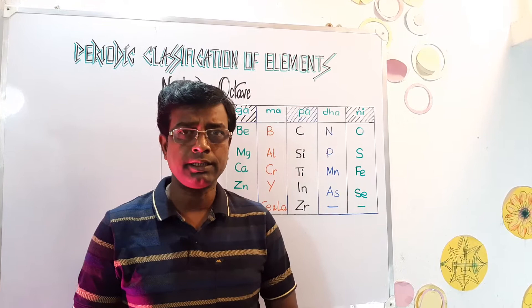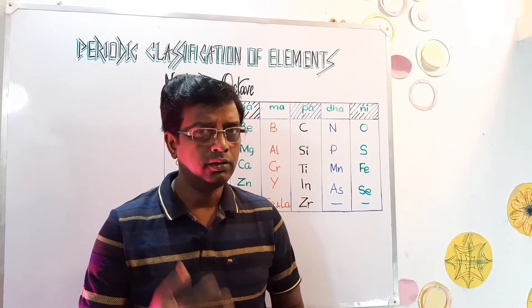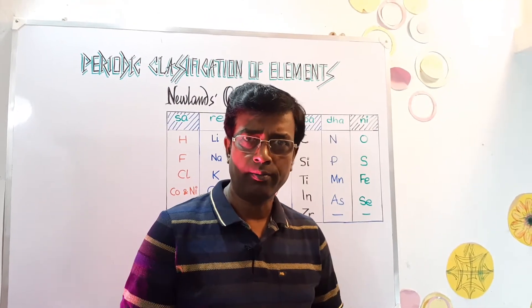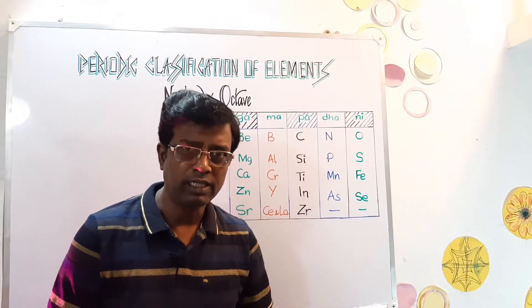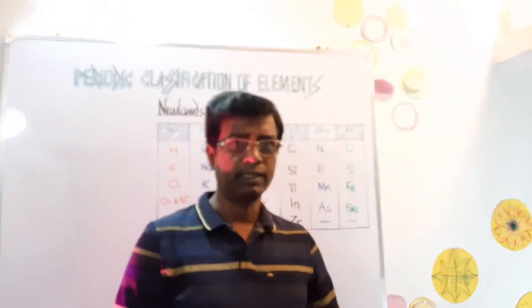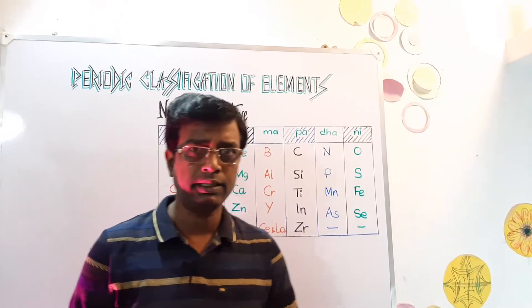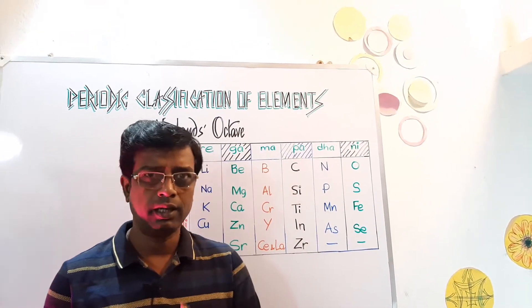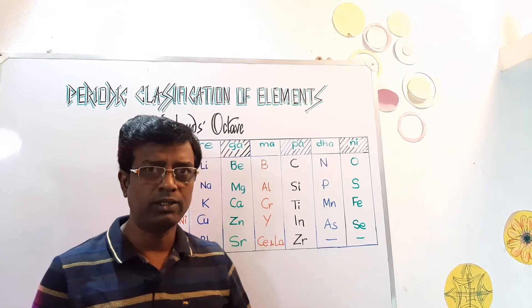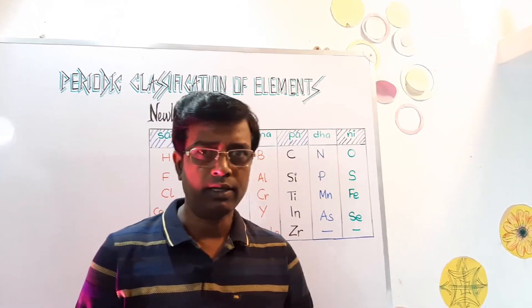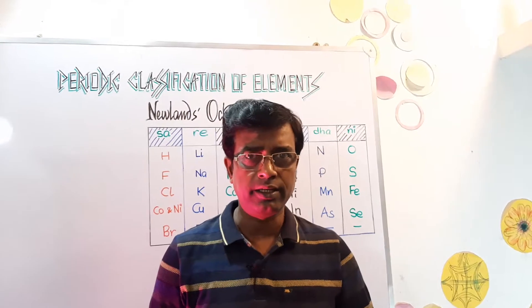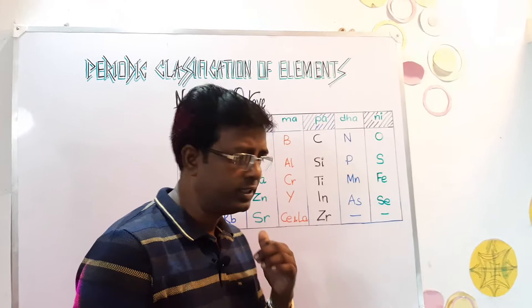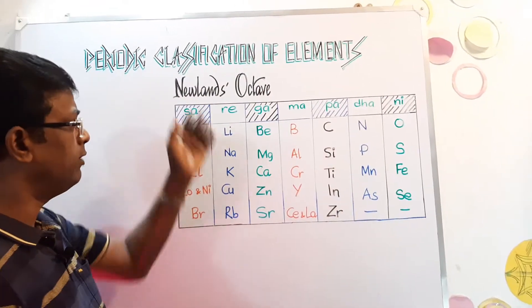In the year 1866, John Newlands classified the elements based upon the basis of atomic masses. Let's discuss in detail about his style of classification. What were his criteria? So let's in this part 2 session focus on that and the board questions which generally come from this Newlands Octave.